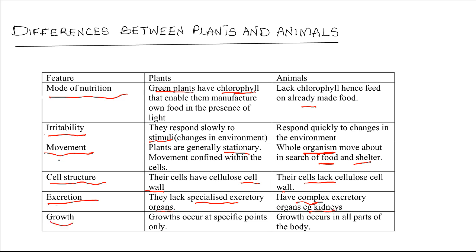Lastly, in terms of growth, plants grow at specific points only, usually at the tips of the shoot and the root, while animals on the other hand grow generally in all parts of their body.